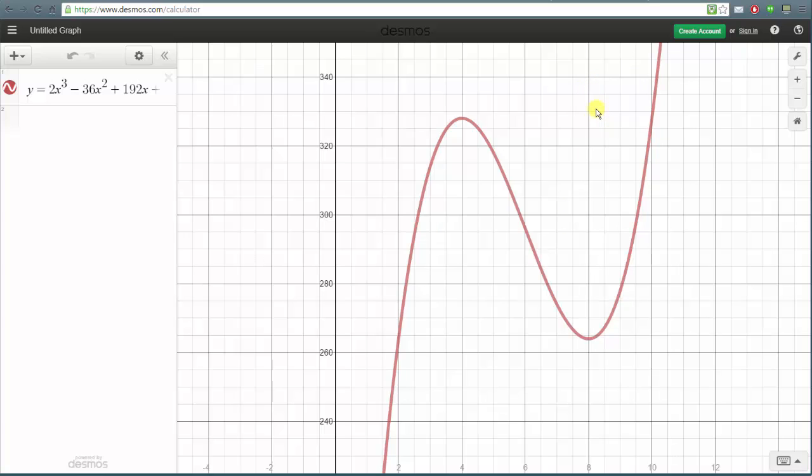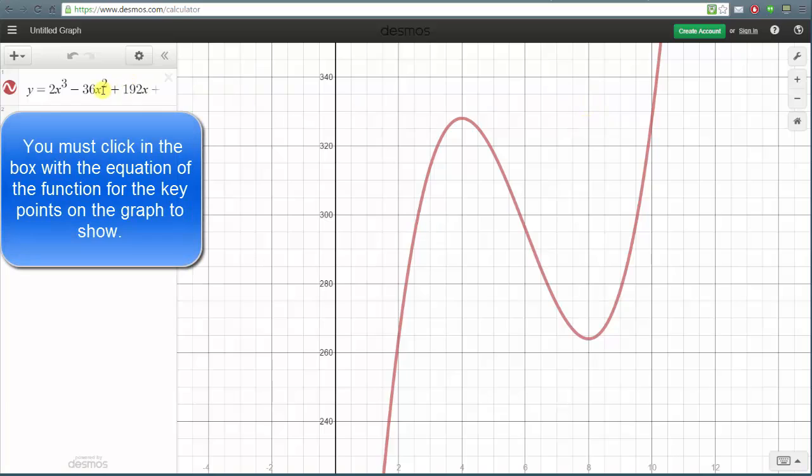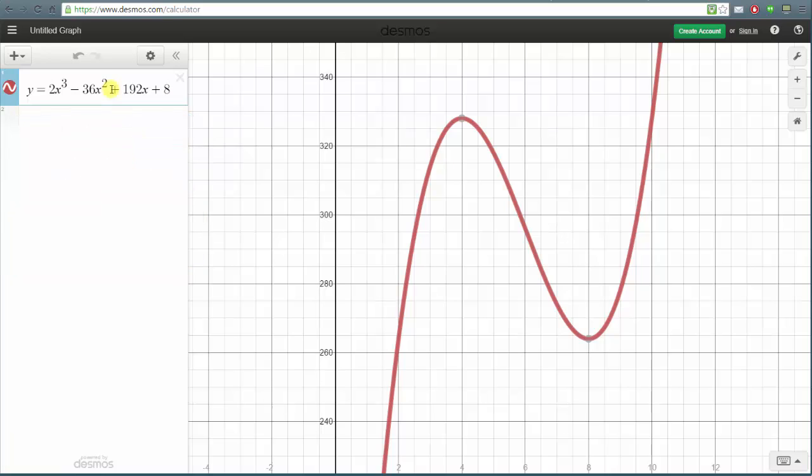And now the great thing about Desmos is we go back and click on the equation. The nice thing about Desmos is now the high point and low point are graphed in gray. And as long as we've clicked on the equation of the function, if we now scroll over those points it's going to give us the coordinates of those points.